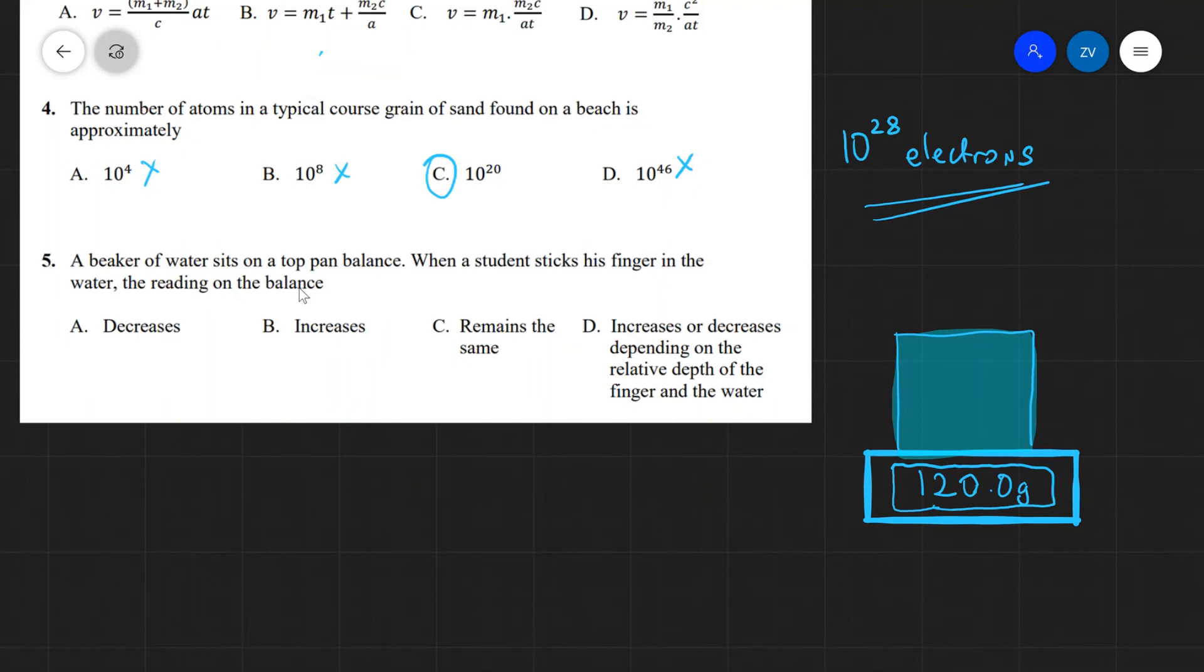Well, anytime we add an object into the beaker, this object will experience an up thrust, which will be pointing upwards. Now, by Newton's third law,